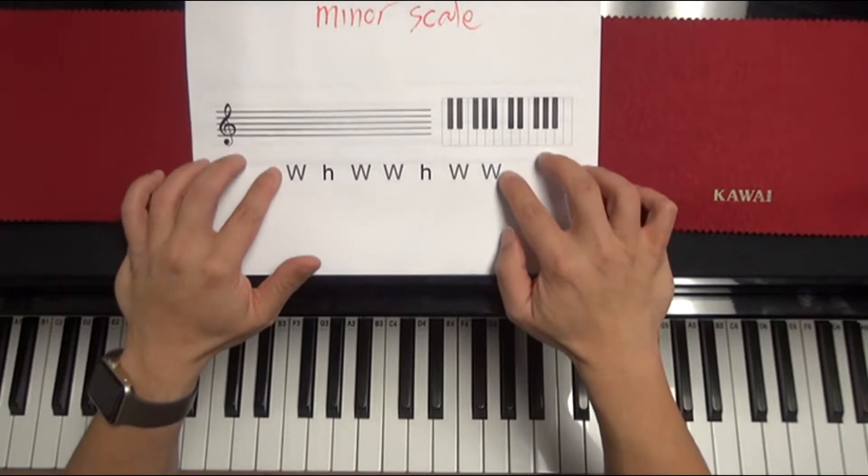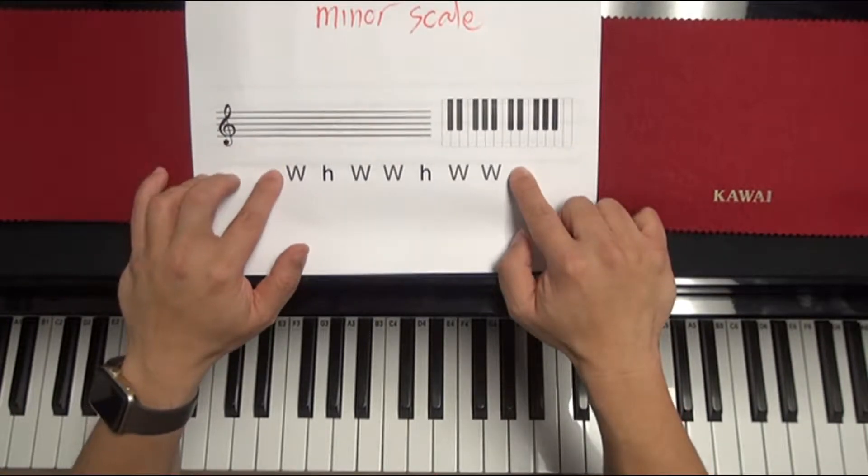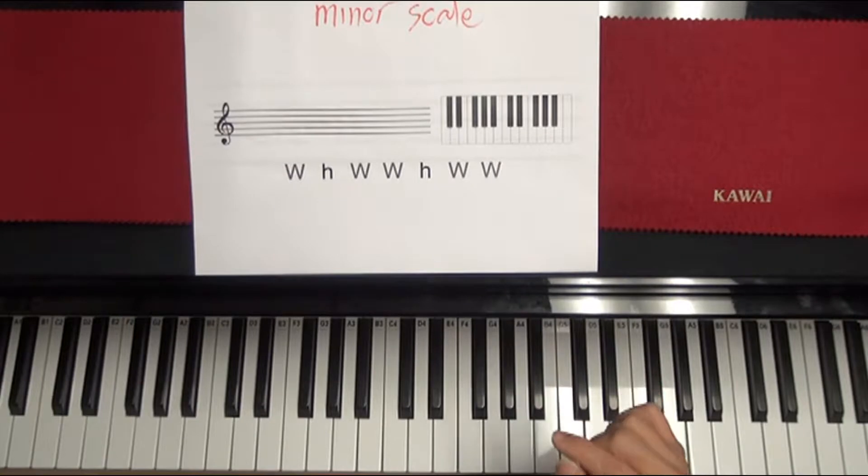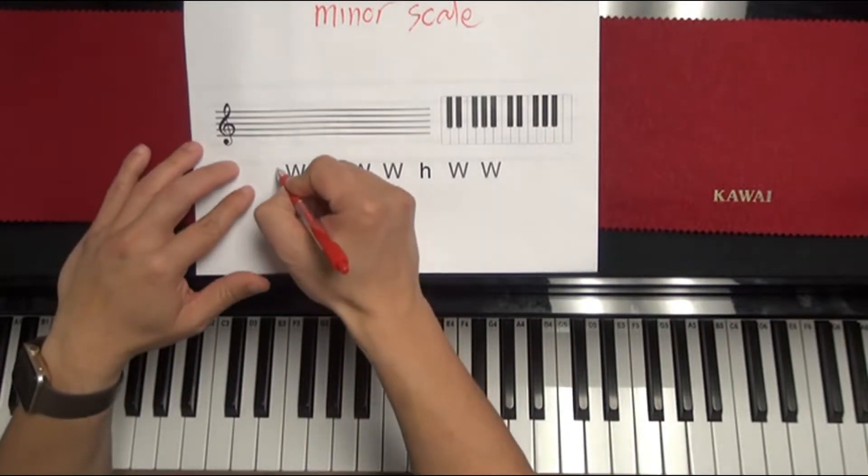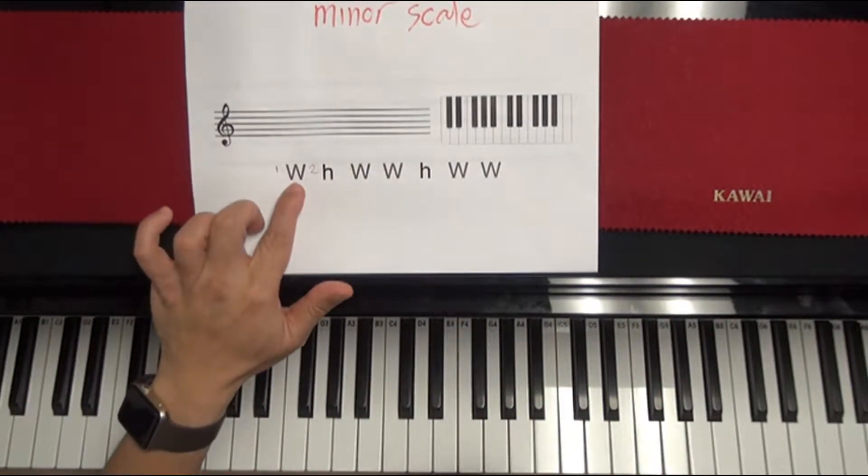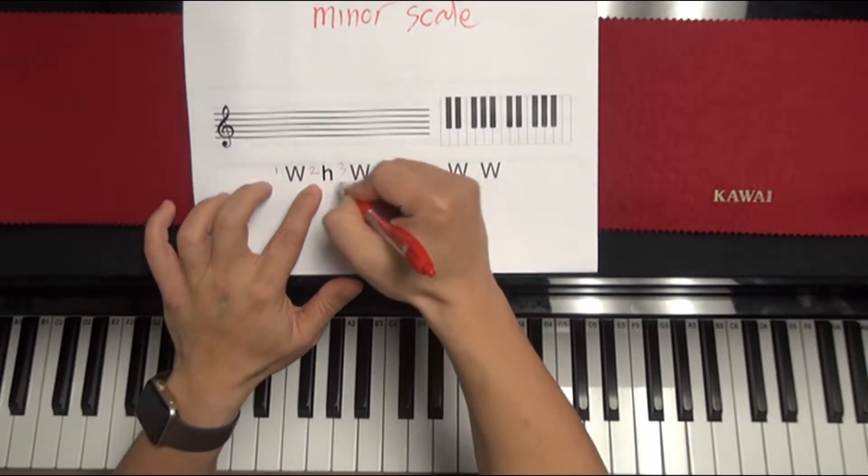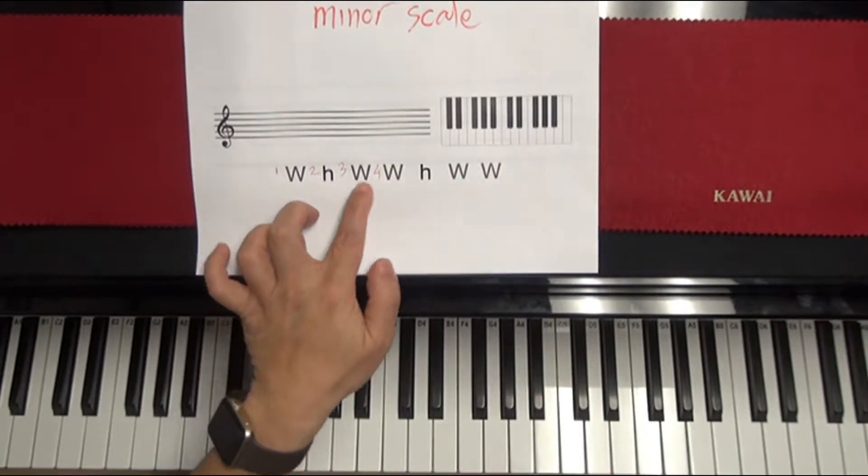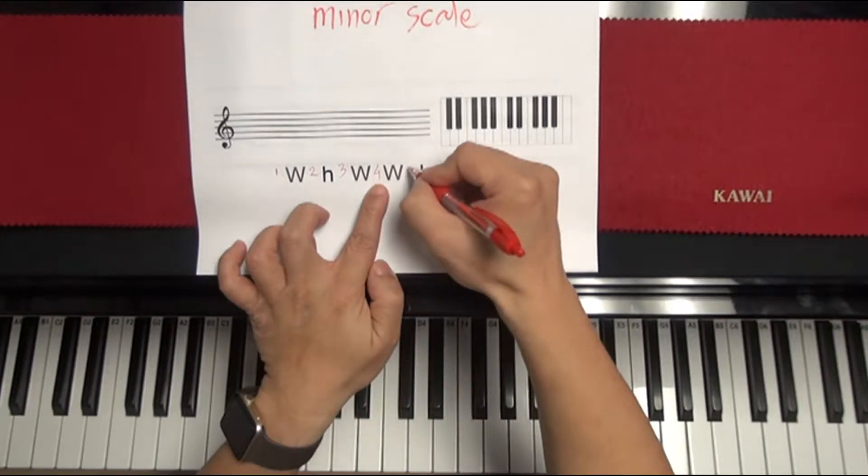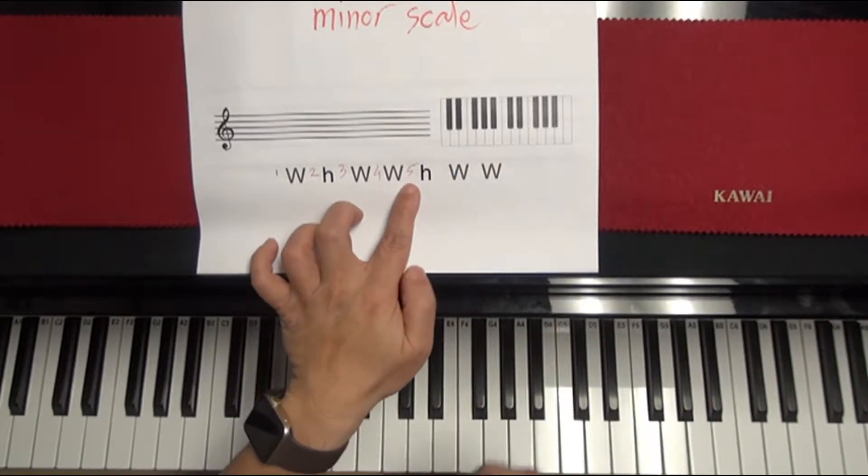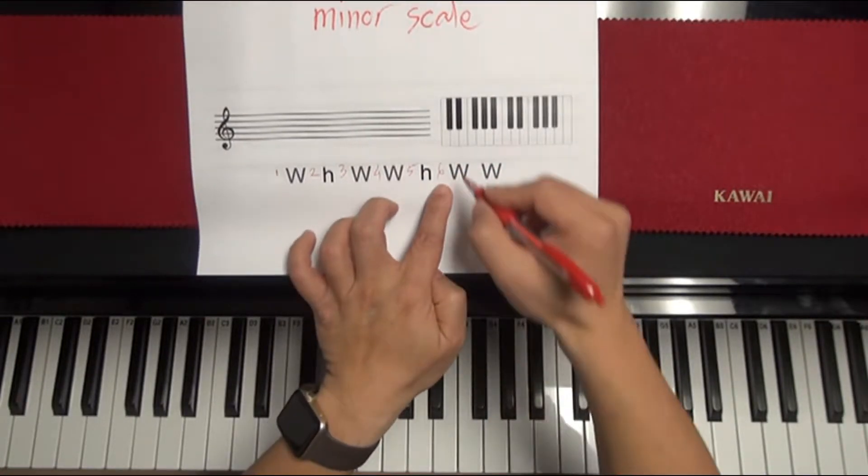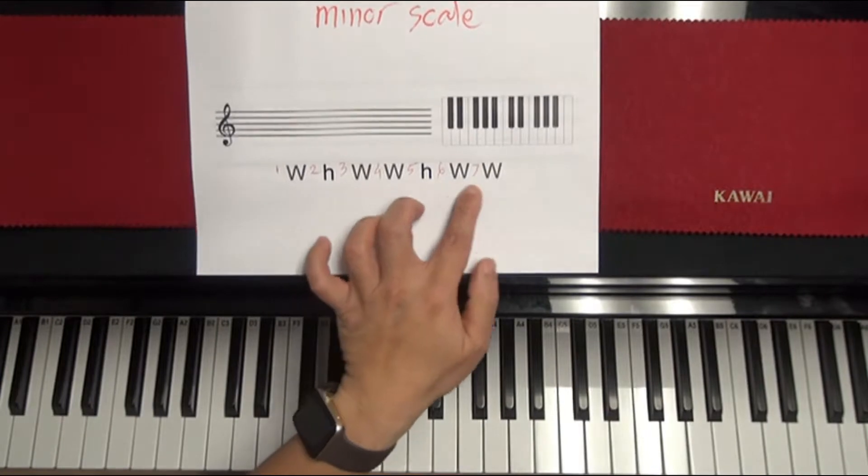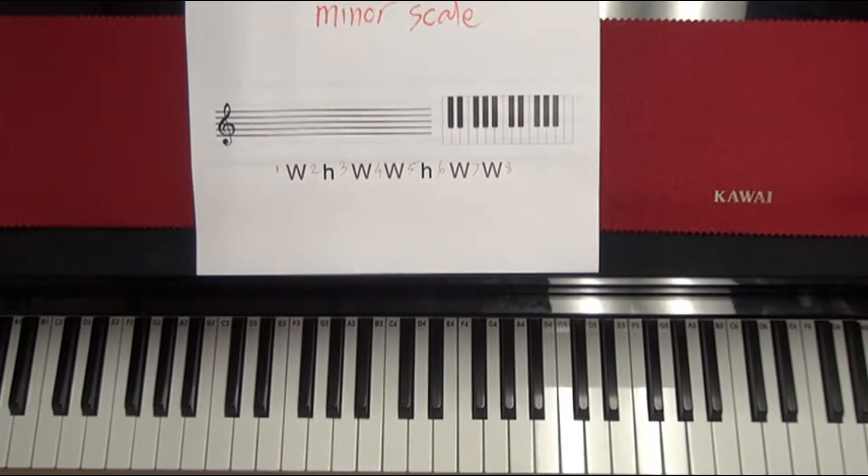As you can look on screen right now, as you can see, that's the formula for the minor scale. The formula for minor scale is from the first note to the second note, it has to be a whole step. That's what the W stands for. And from second note to the third note, it has to be half step. And from third note to fourth note, it has to be a whole step. And from fourth to fifth, it has to be another whole step. And from fifth to sixth, it has to be a half step. And then from sixth to seventh, it has to be a whole step, and seventh to eighth. It's another whole step.